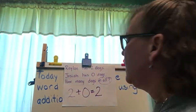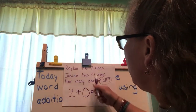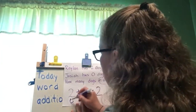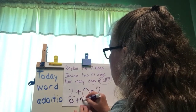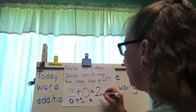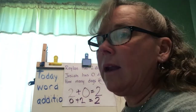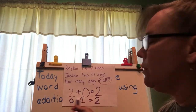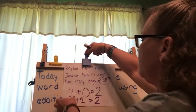You could also write this equation as zero plus two — it's still going to equal two. It doesn't matter when we're adding if the two is first or the zero. It doesn't matter the order that you put the numbers.